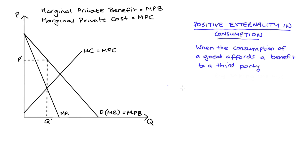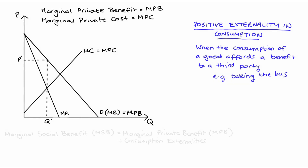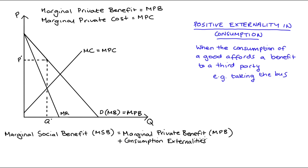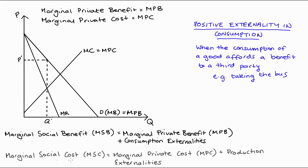Now, when we have a positive externality in consumption, it's the consumption of a good that gives a benefit to a third party. For instance, if I take a bus trip, in consuming that bus trip I don't use my car, so there's less pollution and less congestion for others — that benefit to others is the externality. Externalities are captured in what we call our marginal social benefit (MSB) and marginal social cost (MSC) functions. The MSB function tracks the total benefit from consumption for each unit: that's the private marginal benefit plus any externalities from consumption. The MSC function tracks the total costs of production — not just the marginal private cost, but also any externalities from production.